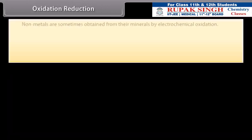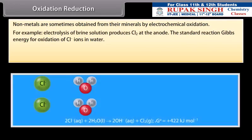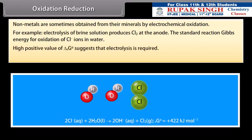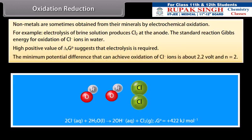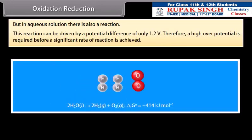Oxidation reduction. Non-metals are sometimes obtained from their minerals by electrochemical oxidation. For example, electrolysis of brine solution produces Cl2 at the anode. The standard reaction gives energy for oxidation of Cl⁻ ions in water. High positive value suggests that electrolysis is required. The minimum potential difference that can achieve oxidation of Cl⁻ ions is about 2.2 volt and n is equal to 2. But in aqueous solution there is also a reaction. This reaction can be driven by a potential difference of only 1.2 volt. Therefore, a high overall potential is required before a significant rate of reaction is achieved.